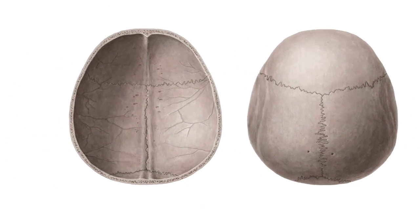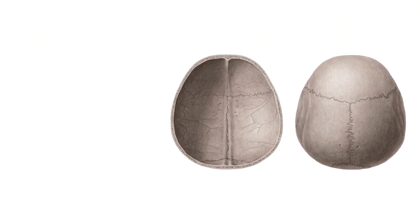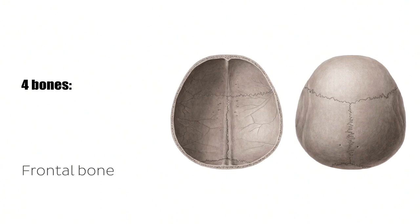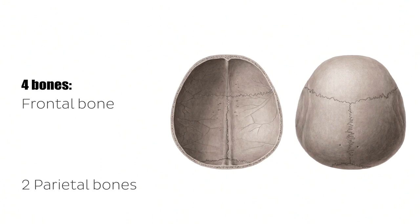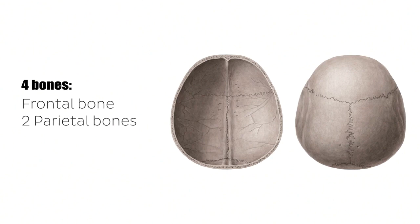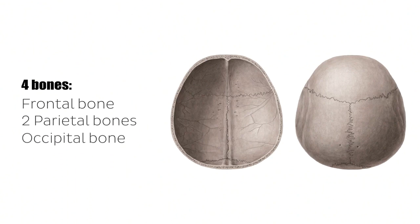From the superior and inferior views, we're going to see four bones specifically, and they're connected to their adjacent bones via sutures that we're also going to cover. These four bones are the frontal bone, the two parietal bones, and the occipital bone.